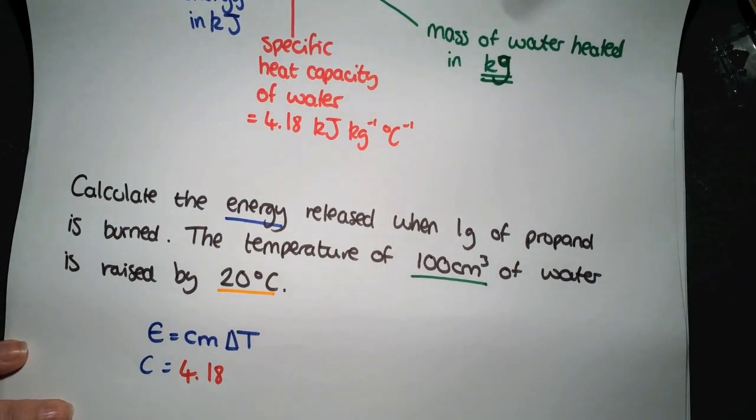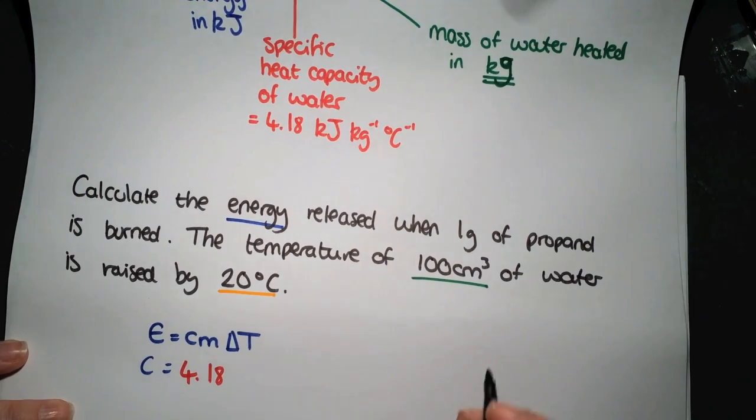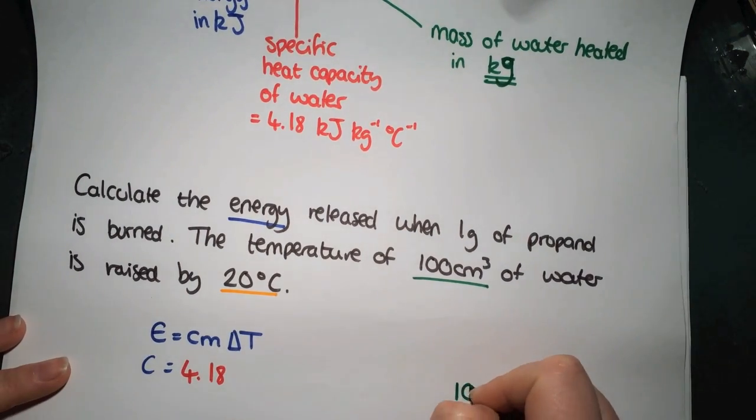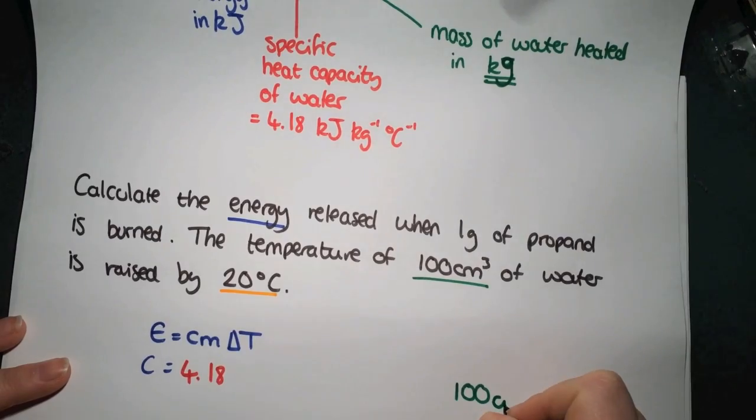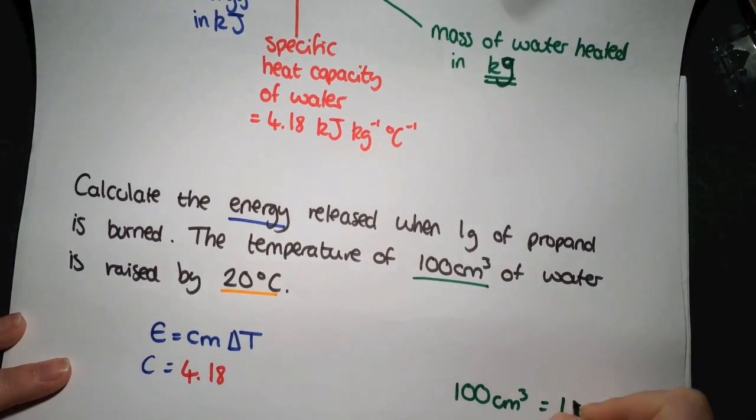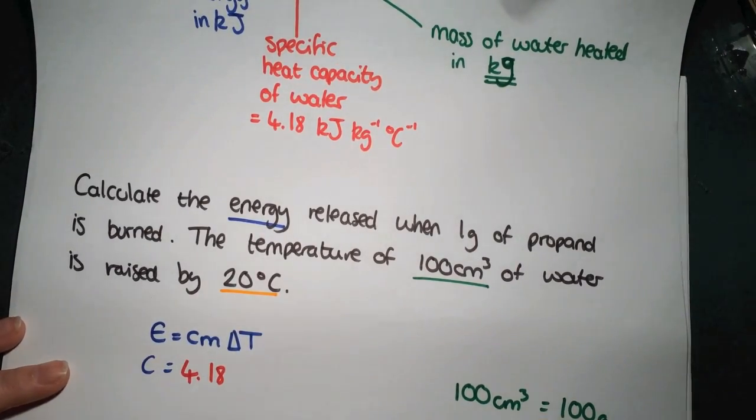We cannot use 100 centimeters cubed of water. That is not a mass. So at the side, 100 centimeters cubed of water is the equivalent to 100 grams of water.